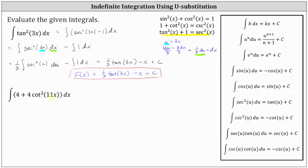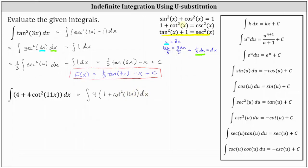Before we do this, let's factor out the common factor of 4 and write this as the integral of 4 times the quantity 1 plus cotangent squared 11x dx. Now looking at the given identities, since 1 plus cotangent squared x is equal to cosecant squared x, we can substitute cosecant squared 11x for 1 plus cotangent squared 11x.